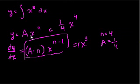I think you might start seeing a pattern here. How did we get from x to the third to 1 fourth x to the fourth? We increase the exponent by 1, and whatever the new exponent is, we multiply it times 1 over that new exponent. And of course, plus c. I would have failed this exam.